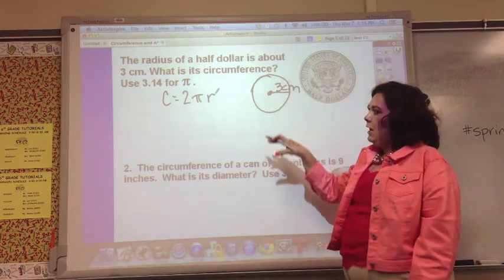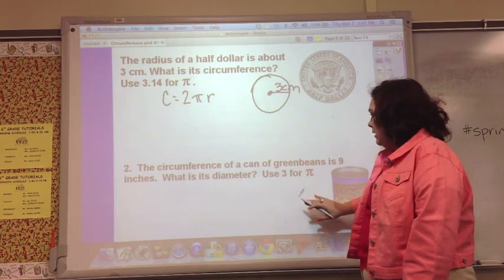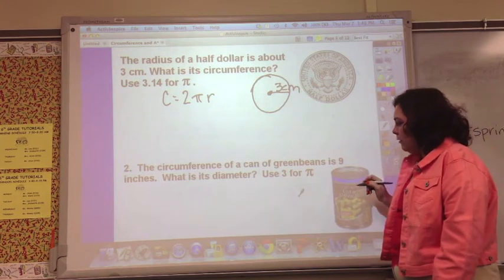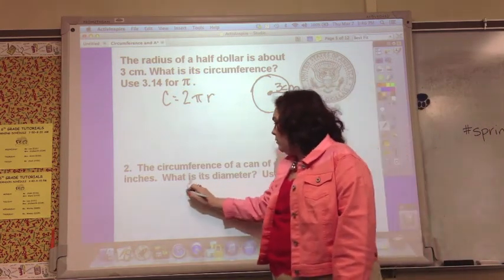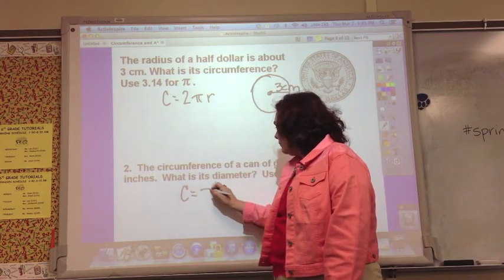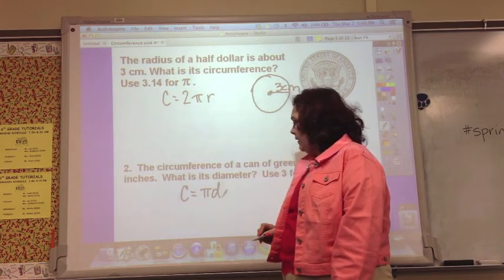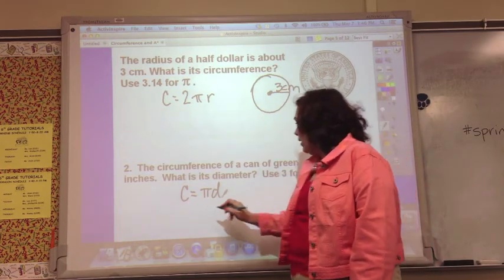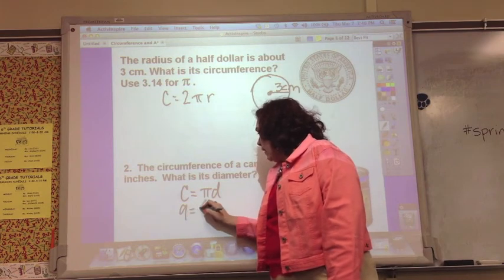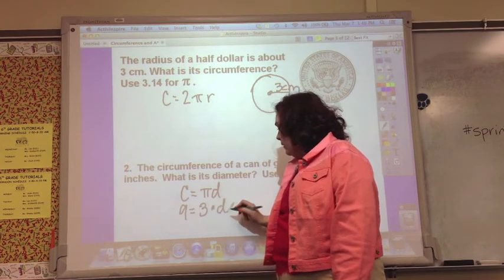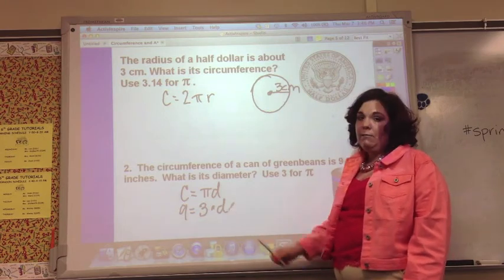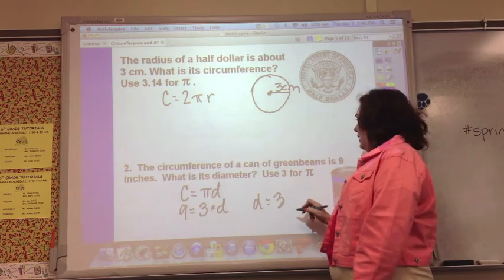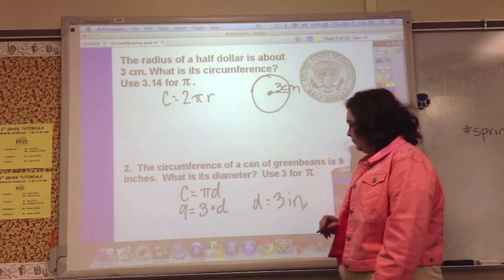This one says the circumference of a can of green beans is 9 inches. What is its diameter? Use 3 for pi. You know the circumference and you're trying to find out the diameter, so you just plug everything into the formula. The circumference is 9, use 3 for pi, so it's real easy to see that the diameter has to be 3. The diameter equals 3 inches.